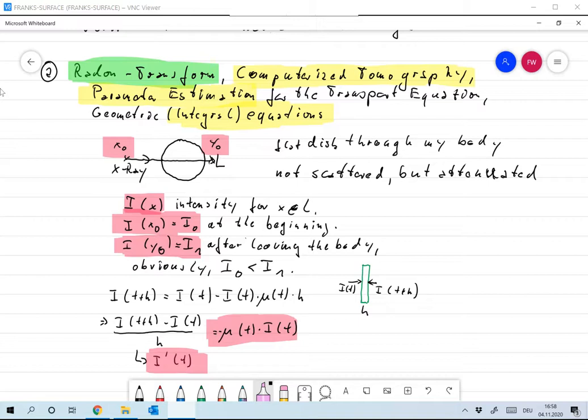After the x-ray leaves my body, we assume we are able to measure the x-ray at some point—at that point y0. So at the exit point, the value of the intensity of the x-ray beam is I1. And we want to mathematically describe how I1 is produced by I0 and the x-ray transport. Obviously, in the beginning the x-ray has a larger intensity than at the end, because it travels through my body and is somehow attenuated, so we believe that I0 is larger than I1.